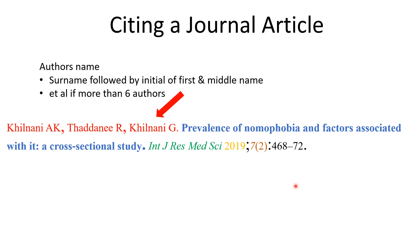The first element is the author's name. The surname is written first, followed by the initials of the first and middle name — for example, Khilnani A K, where Khilnani is the surname, A is the first name, and K is the middle name. All authors are written in this format. If there are more than six authors, after writing the names of the first six authors, we add 'et al.' at the end.